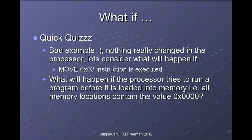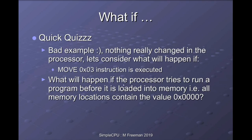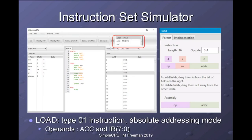Move zero is not the best example since nothing visibly changes. Consider: what would happen if we did 'move 3' instead — how would the instruction register change, and what would be stored in the accumulator? Also consider what happens if the program starts before it has been loaded into memory. The memory would be blank, containing all zeros. The processor cannot tell if memory contains an instruction or not — if the memory contains all zeros, the processor would constantly execute 'move zero,' because that is the same bit pattern as all zeros.